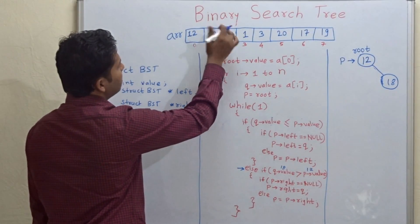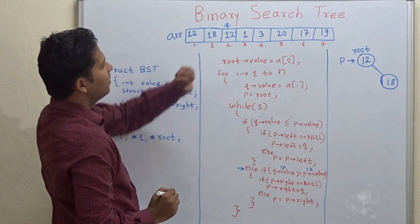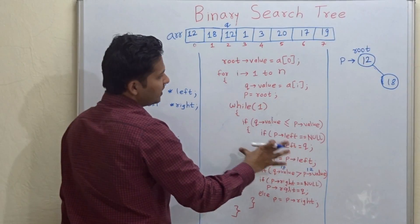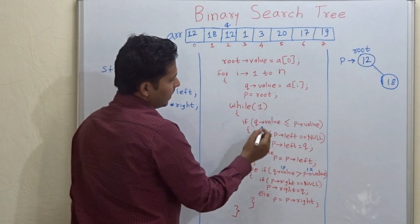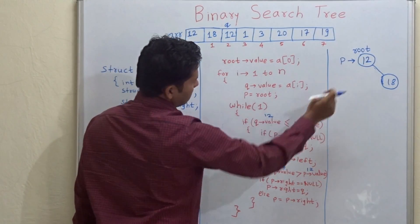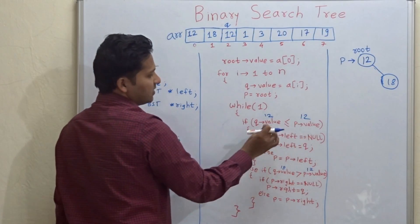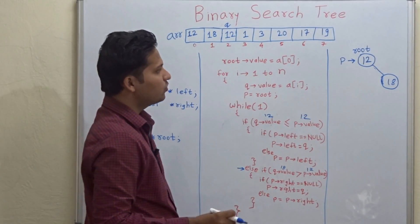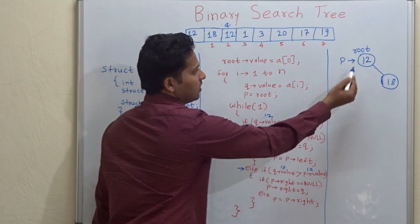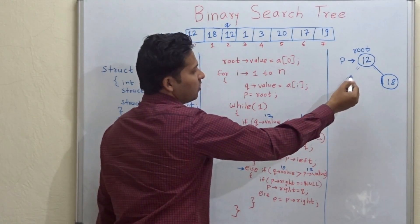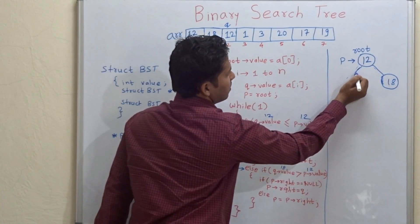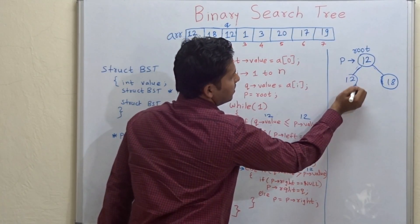Going to the next node — 15. Entering the while loop: is 15 less than or equal to p (which is 12)? No — wait, 15 equals 12? Actually 15 is greater, but checking: is left of p null? In this case it is null, it is empty, so we attach 15 accordingly.